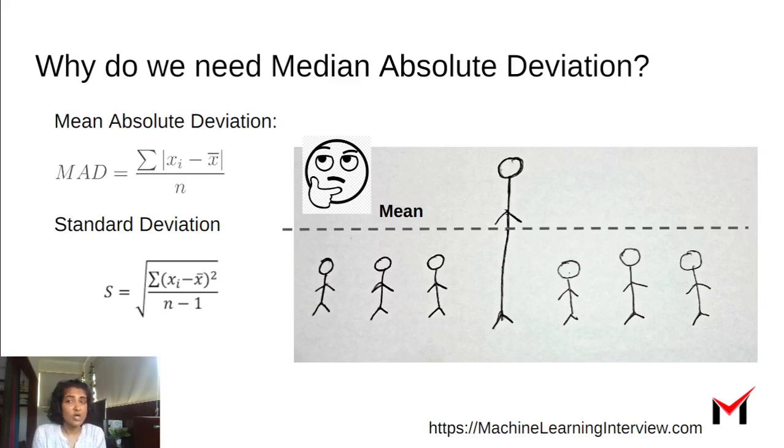These are common measures. Even when you do a regression problem and you're trying to see how far the predicted values are from the actual values, it's common to use mean absolute error or root mean square error.